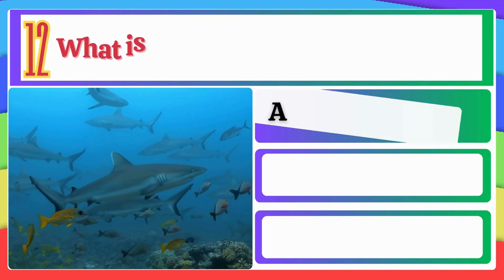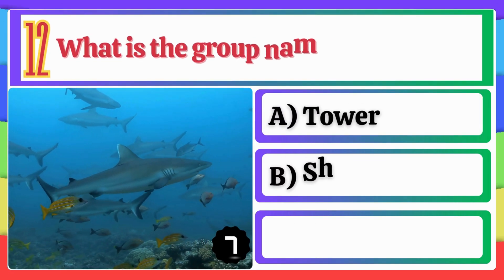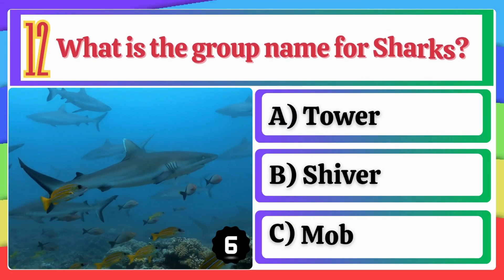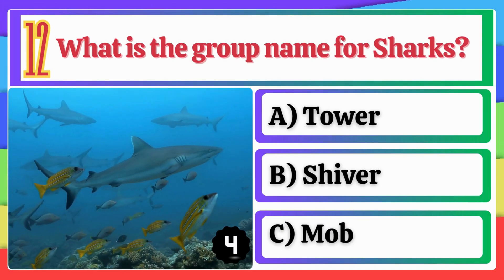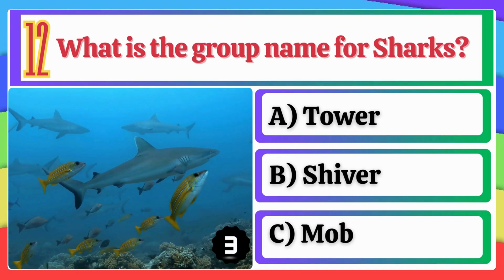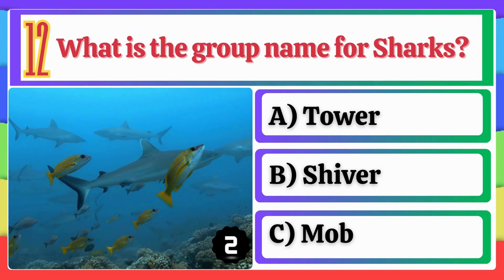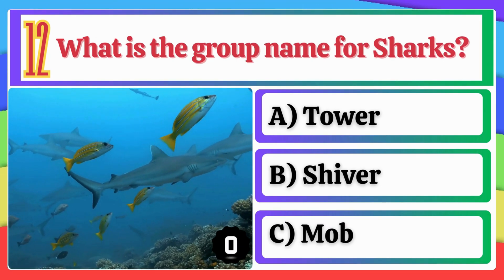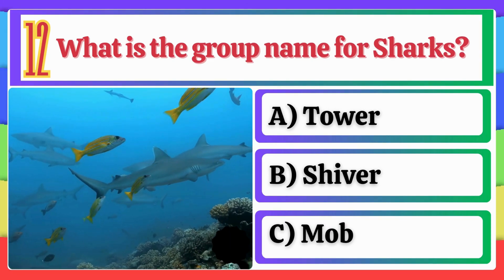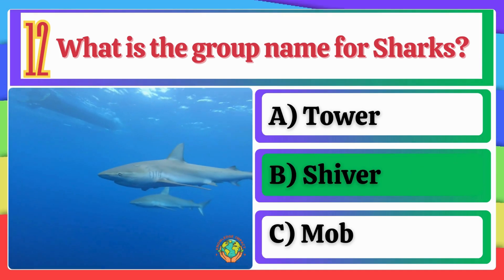What is the group name for Sharks? A. Tower. B. Shiver. C. Mob. Option B, Shiver, is correct.